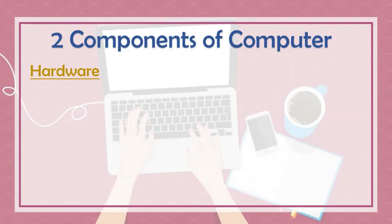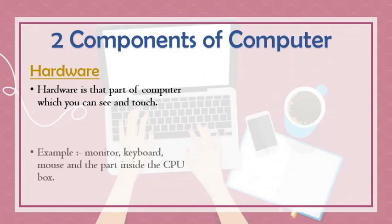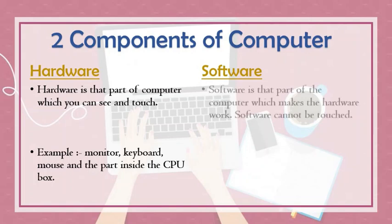Next, the two components of a computer. First is hardware. Hardware is that part of the computer which you can see and touch. For example, monitor, keyboard, mouse, and the parts inside the CPU. These parts you can easily see and touch.